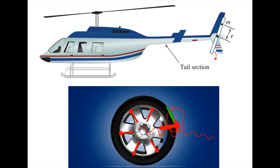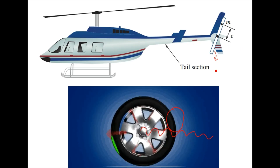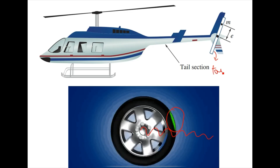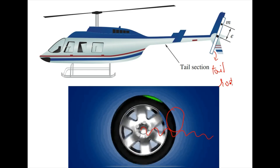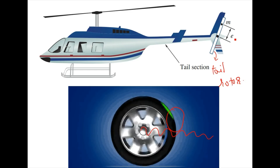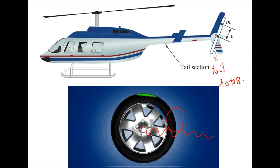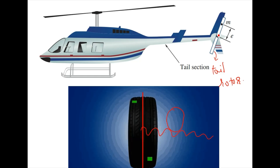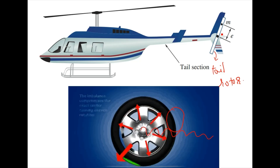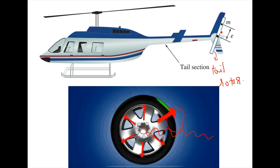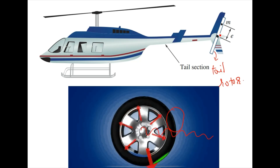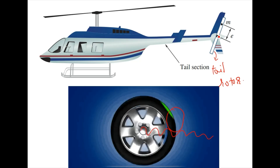Similar to the wheel, you can also observe the same phenomenon with the tail rotor system. If the rotating blade weights are not properly balanced, this can happen due to material defects, design, or manufacturing issues of the parts.